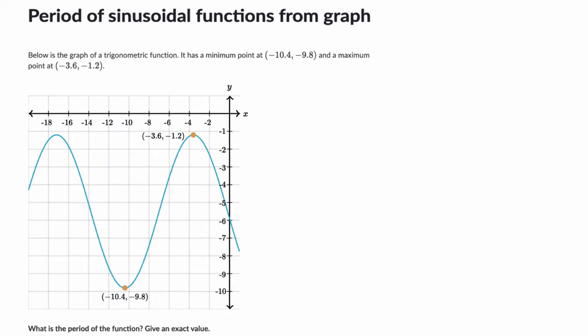In the first problem, for example, they give you a minimum point here and a maximum point. So first of all, let's be clear. A period is the distance from one maximum to the next maximum. That's one way to nicely define your period. That's our period right there. It's also the distance from one minimum to the next minimum.